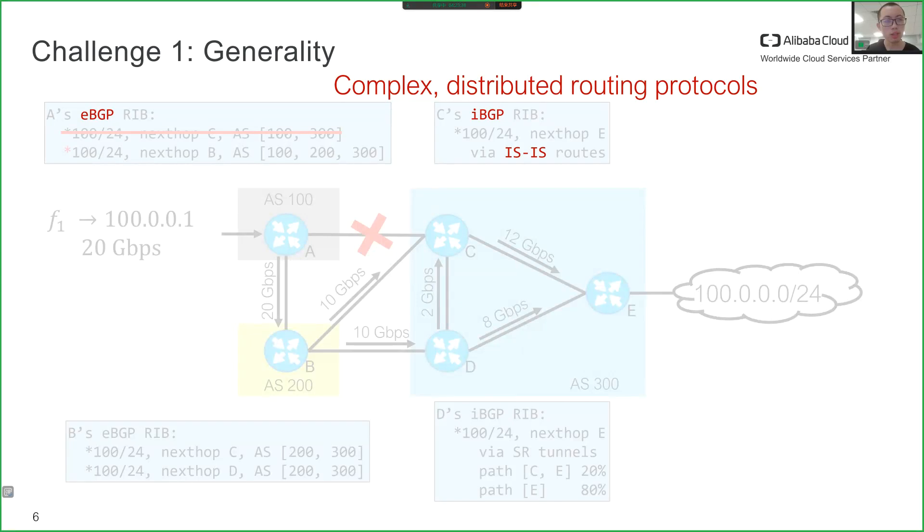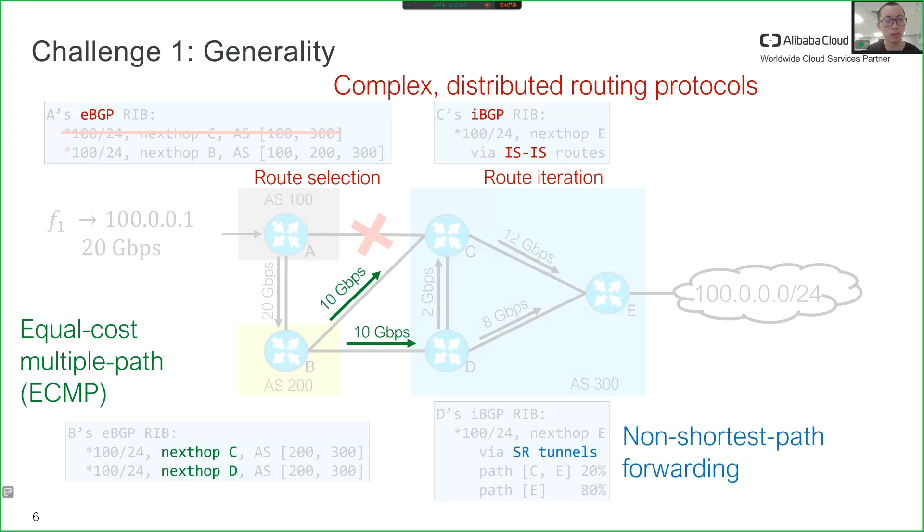As the example shows, WAN runs a distributed control plane with complex routing protocols such as EBGP, IBGP, and IGPs that interact through route selection and route redistribution. Equal cost multipath, or ECMP, is used for load balancing. SR tunnels are configured for traffic engineering, resulting in non-shortest path forwarding. This is the first challenge: we must be general enough to support all these network features.